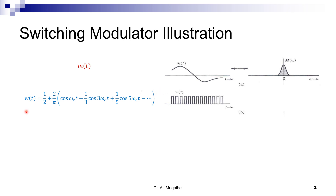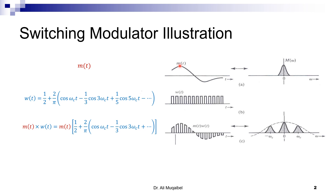The square wave is either zero or one, and in its Fourier representation it can be expressed as one-half, which is the average value — assuming zero and one with equal width, the average value is one-half. When you multiply the message by this square wave, you get the following shape: you get your original signal whenever the square wave is one, or nothing (zero) otherwise. This is the result of the multiplication.